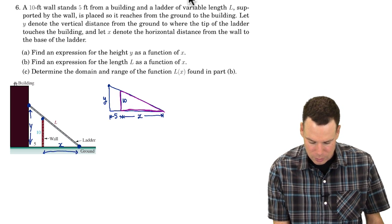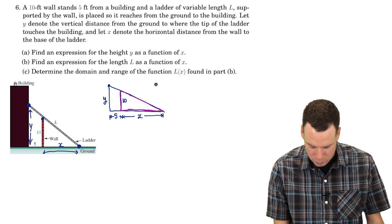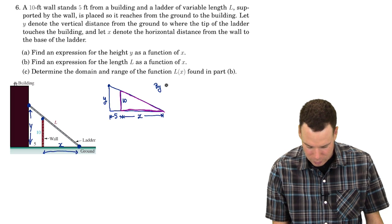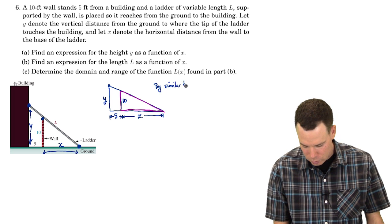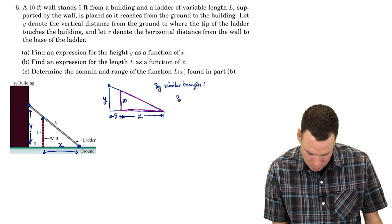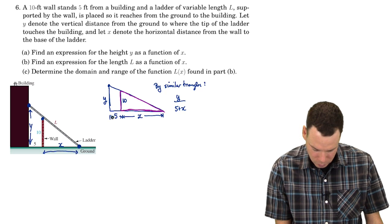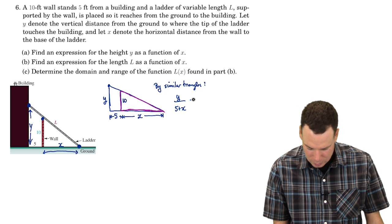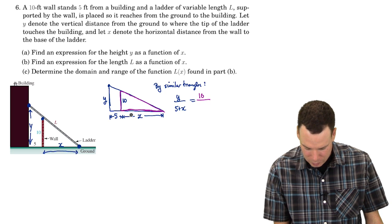And that means that their ratio of corresponding sides are the same. So by similar triangles, we have that the height of the big triangle over the base of the big triangle is equal to the height of the small one over the base of the small one.